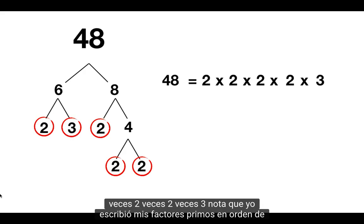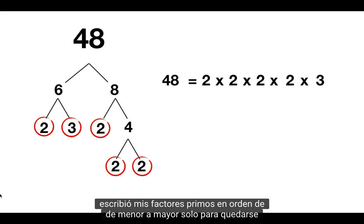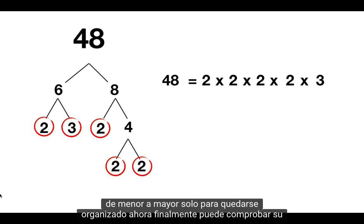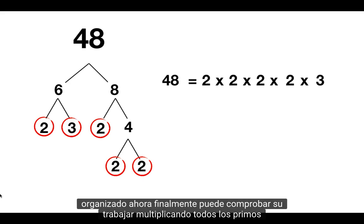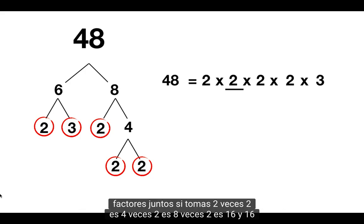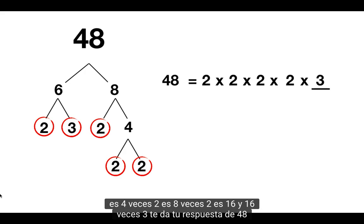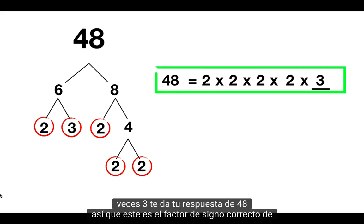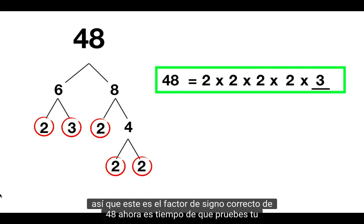Notice that I wrote my prime factors in order from smallest to biggest, just to stay organized. Now finally, you can check your work by multiplying all of the prime factors together. If you take 2, times 2 is 4, times 2 is 8, times 2 is 16, and 16 times 3 does give you your answer of 48. So this is the correct prime factors of 48.